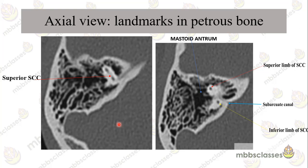Moving further down, you will see the semicircular canals. The first visible is the superior semicircular canal, which lies at a right angle to the petrous bone. Since it is a tubular structure, when sections are taken it appears like two dots — the superior limb and the inferior limb. Now the mastoid antrum comes into view; this is the largest mastoid air cell. When looking for disease, we have to assess the pneumatization of the mastoid, the cellularity, the bony septa, and any mucosal thickening.